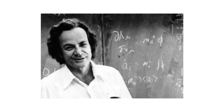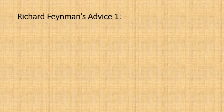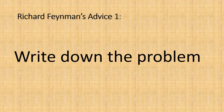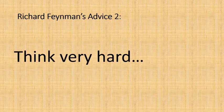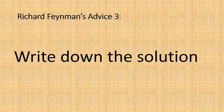Richard Feynman perhaps slightly facetiously passed on three tips for how to solve physics problems for use by undergraduates. Tip number one: write down the problem. Tip number two: think very hard. Tip number three: write down the solution.